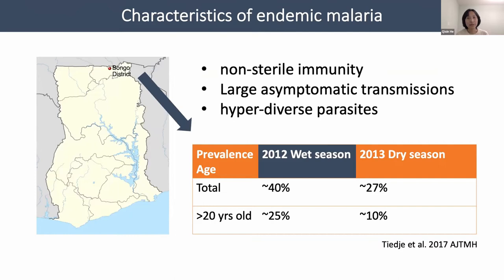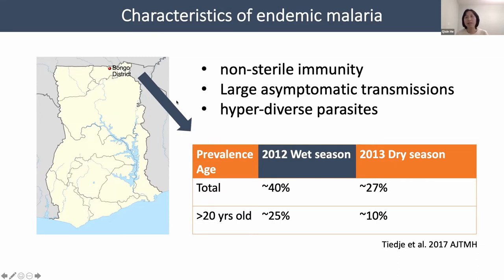In malaria transmission, there are three important epidemiological characteristics rarely observed in other diseases. First, hosts do not have sterile immunity even in endemic regions, meaning that even adults carry these parasites year-round — not just in the wet season but also in the dry season — forming a really large asymptomatic transmission reservoir. The symptomatic cases are only the tip of an iceberg, usually caused by a very large, hyper-diverse pool of parasites.